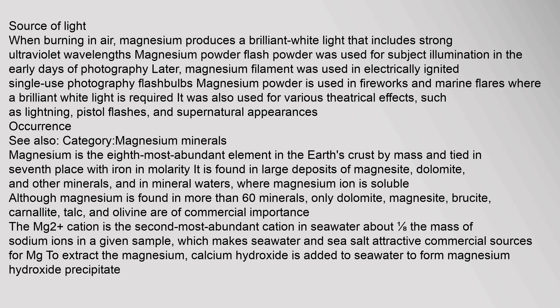Magnesium is the eighth most abundant element in the Earth's crust by mass and tied in seventh place with iron in molarity. It is found in large deposits of magnesite, dolomite, and other minerals, and in mineral waters, where magnesium ion is soluble. Although magnesium is found in more than 60 minerals, only dolomite, magnesite, brucite, carnalite,